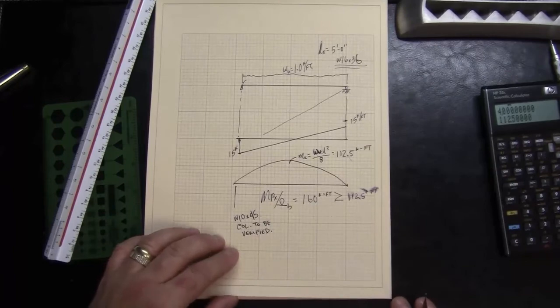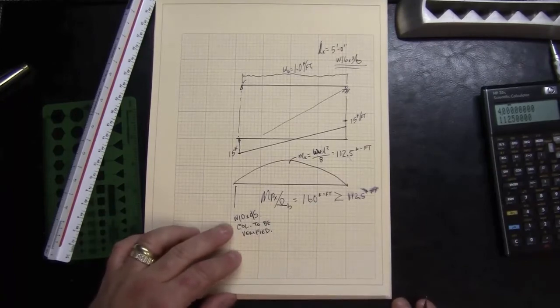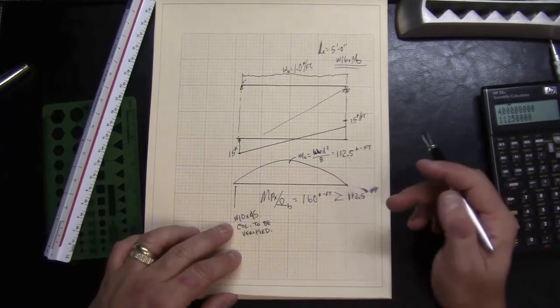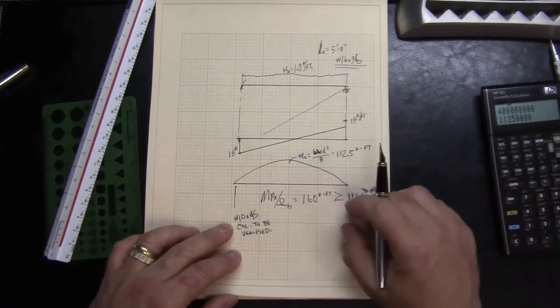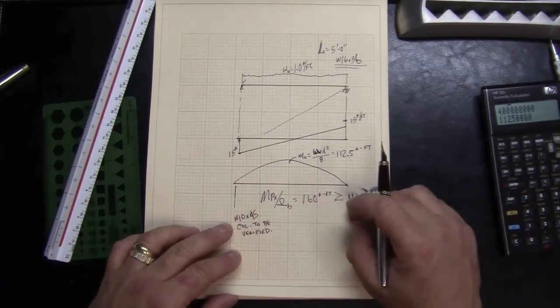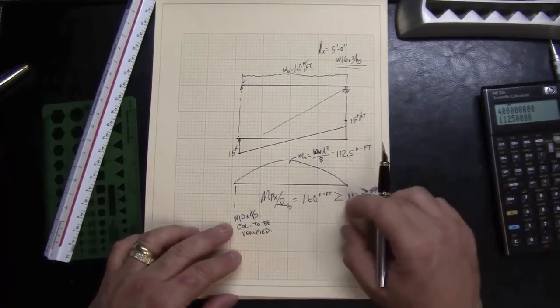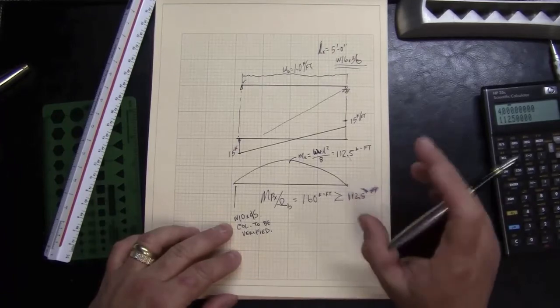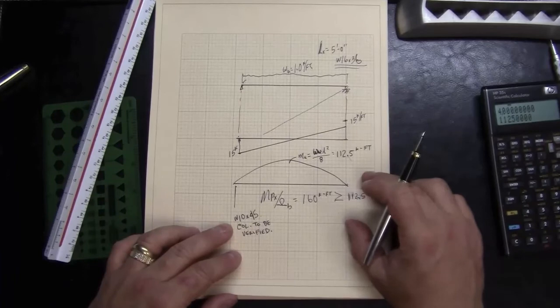The reason we wouldn't go down to the W8 column family has to do with the connections and having room to fit bolts around it. Really, the steel industry is currently recommending a 10 inch be the smallest column depth that we work with.